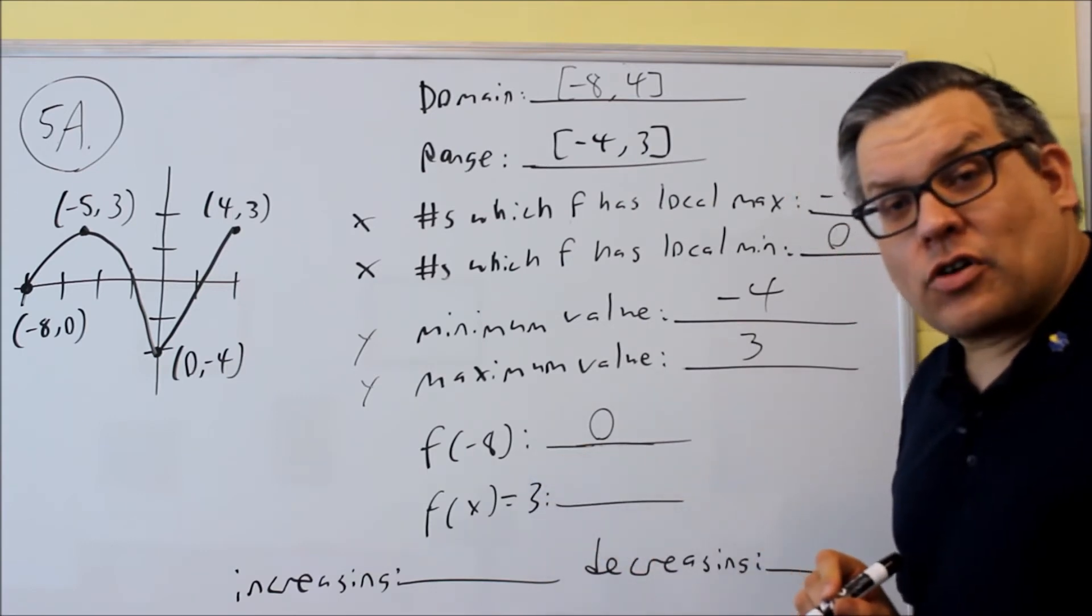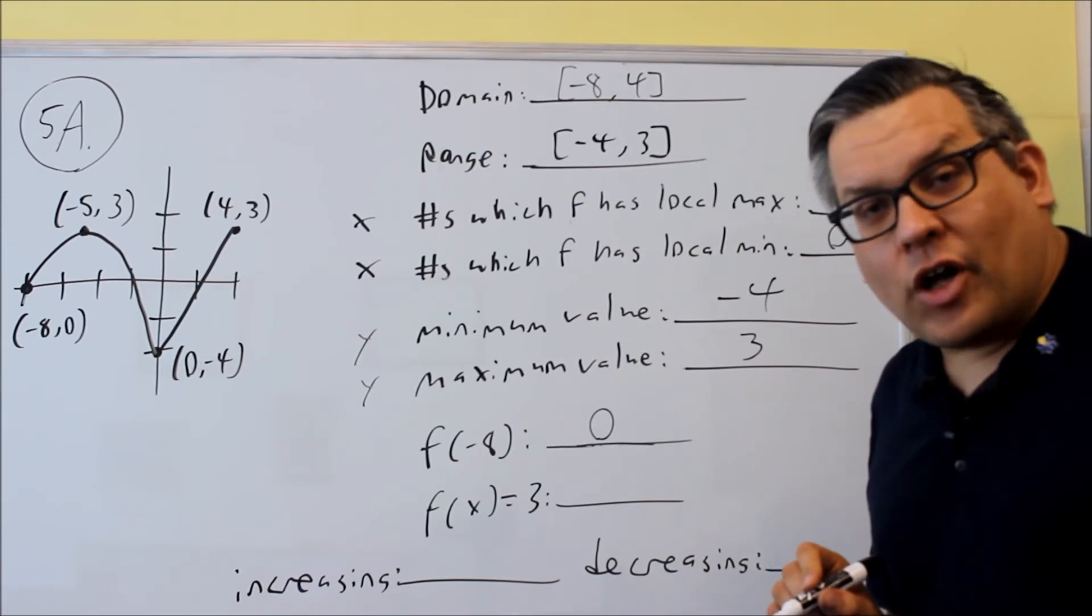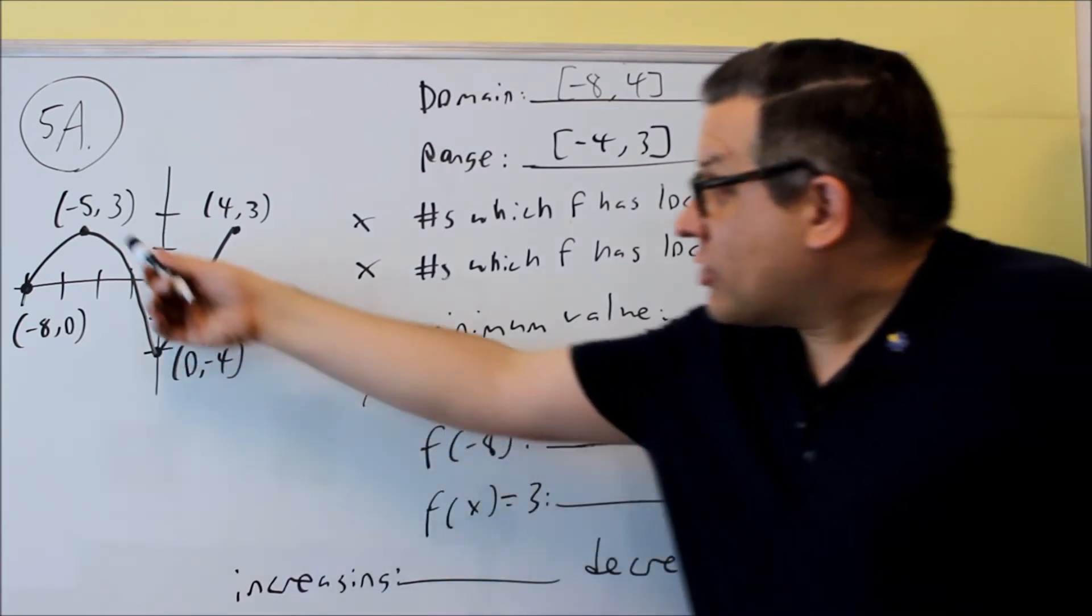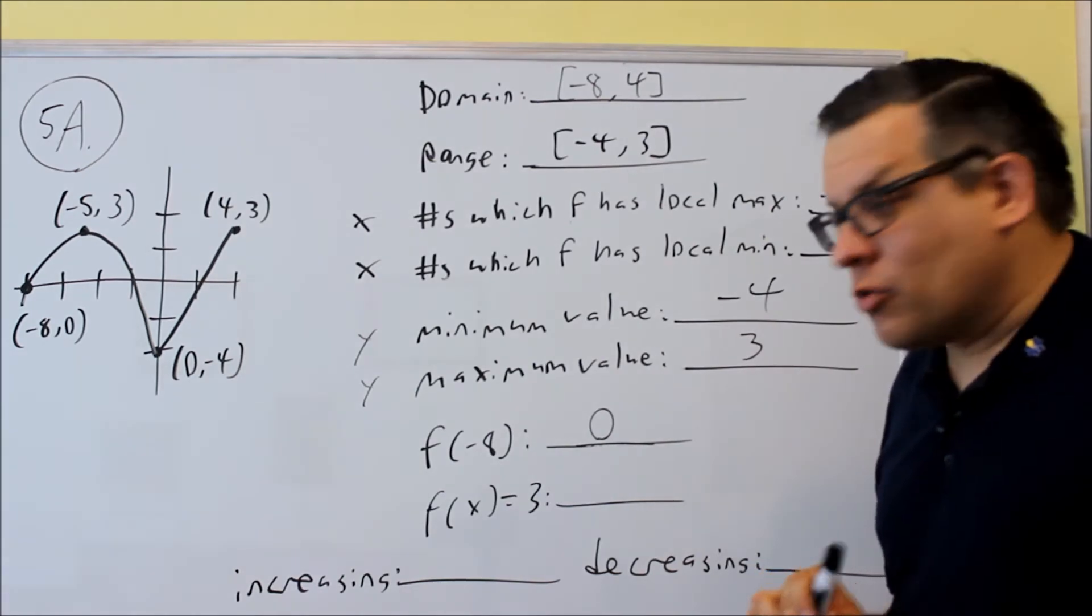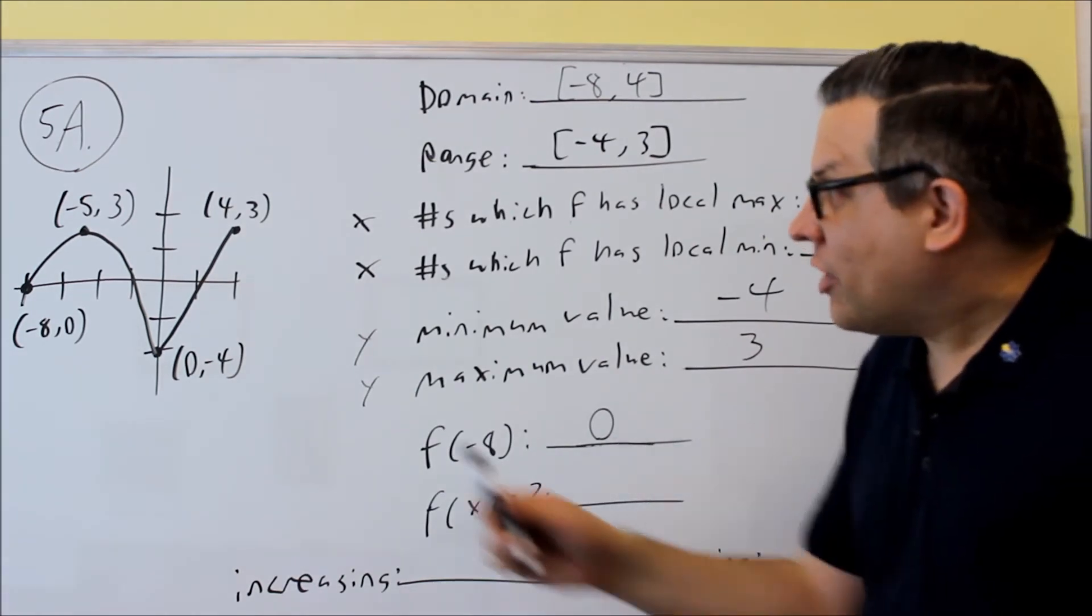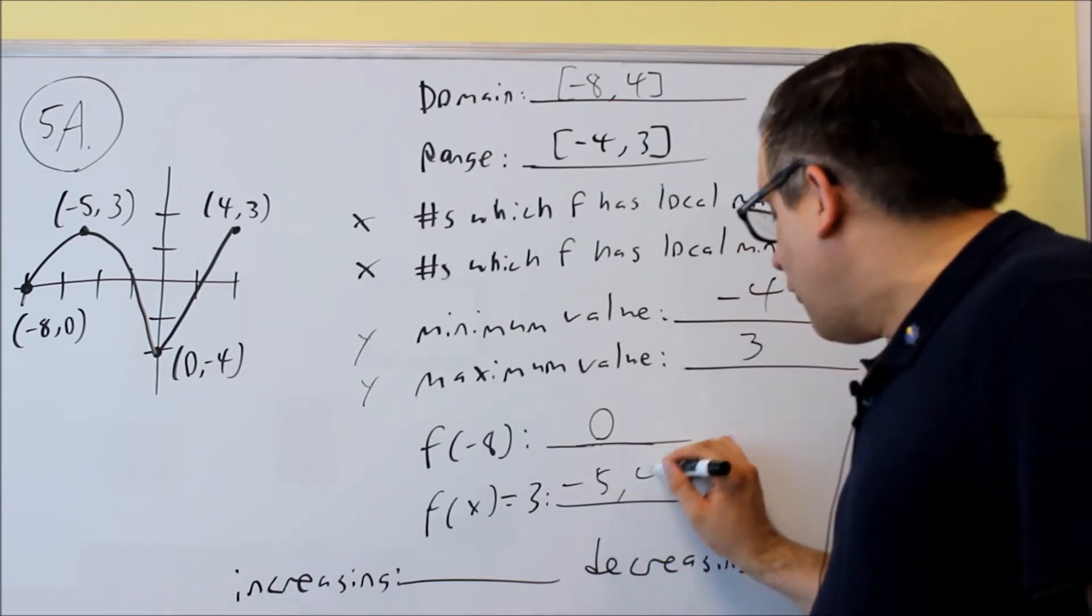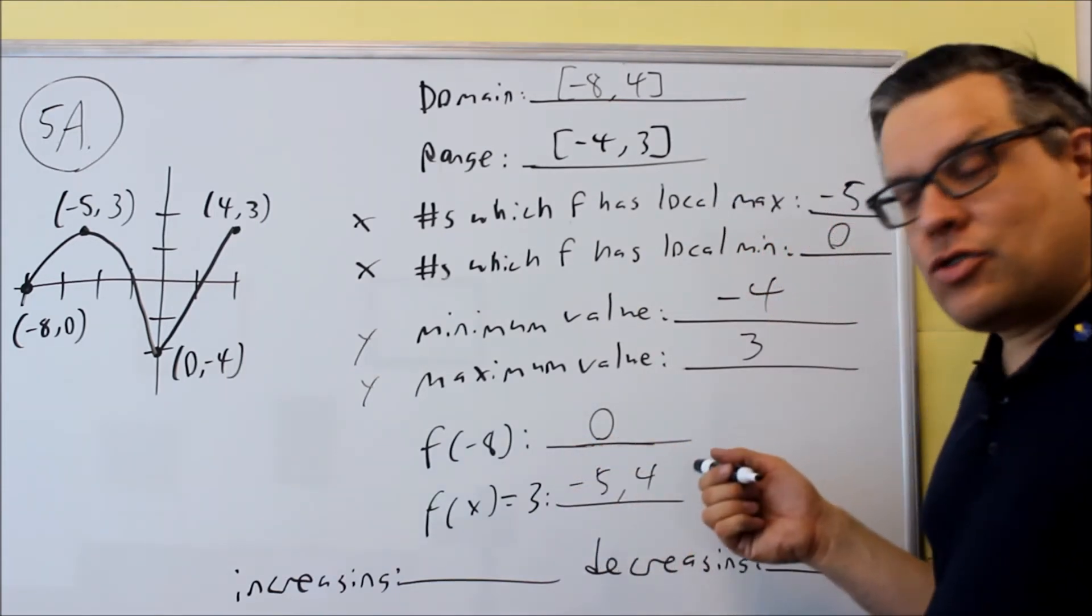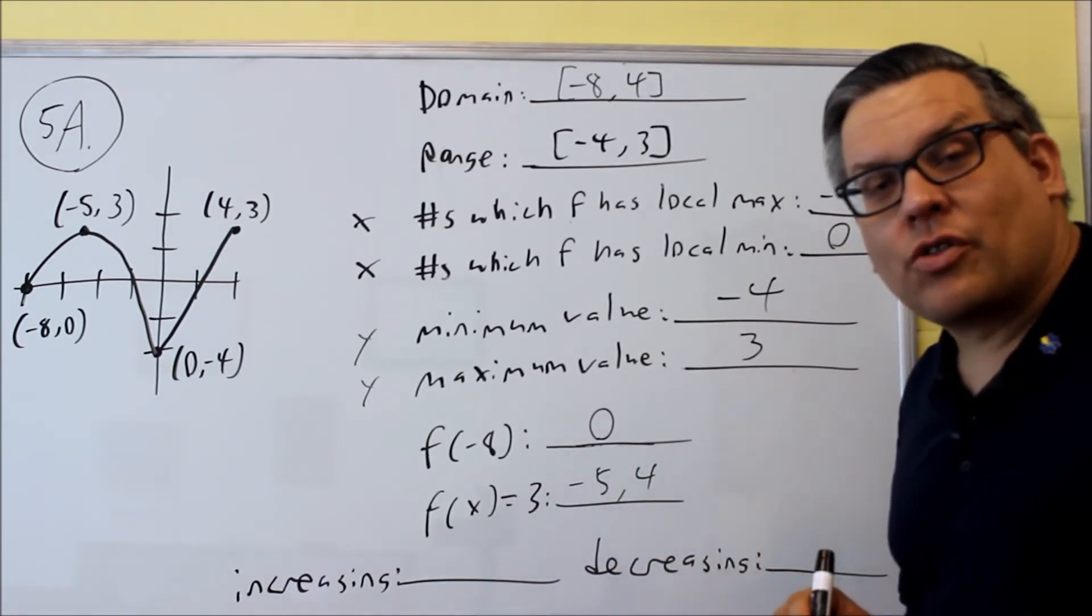The other one is asking the reverse. It's saying, what x value will give me a y value of 3? And what I notice is there's actually two different places where the y value equals 3. So I'm going to have two answers here. Negative 5 and 4. Two answers, two places. If I do f of negative 5 and f of 4, both of those are going to equal 3.